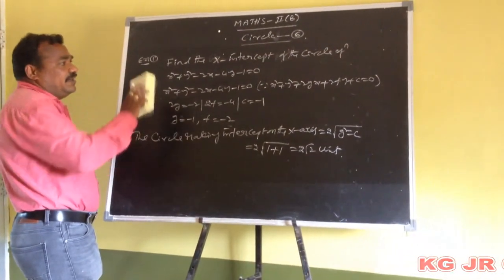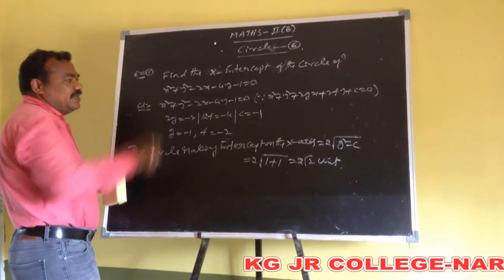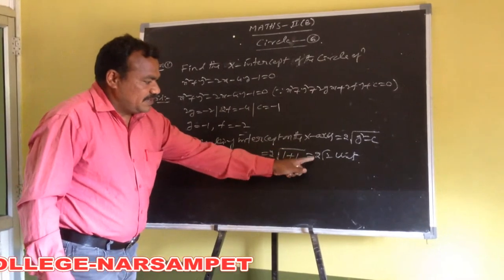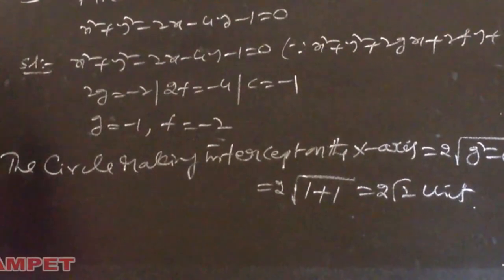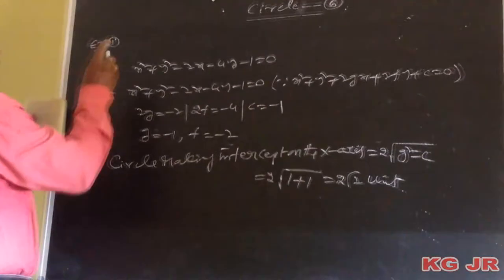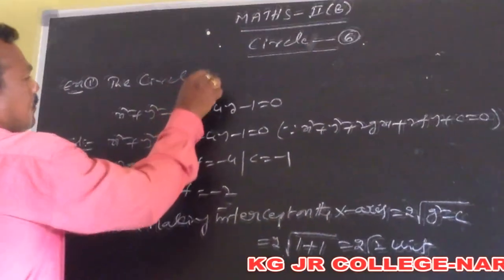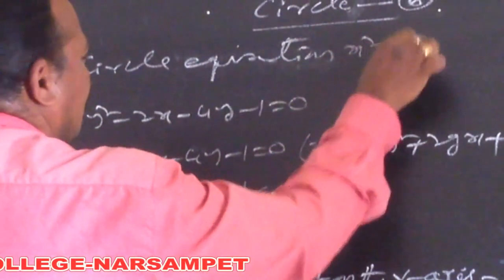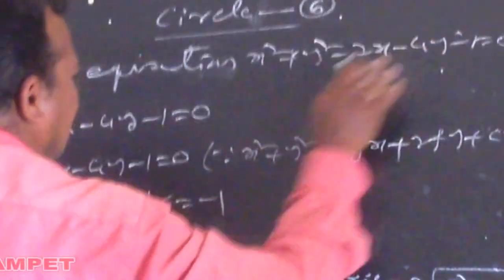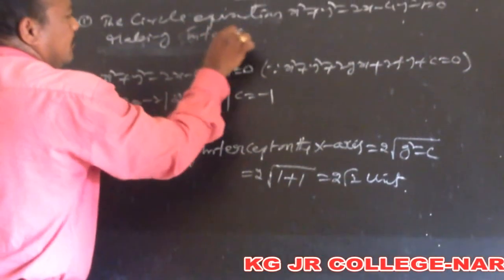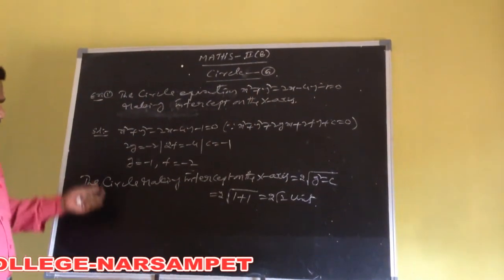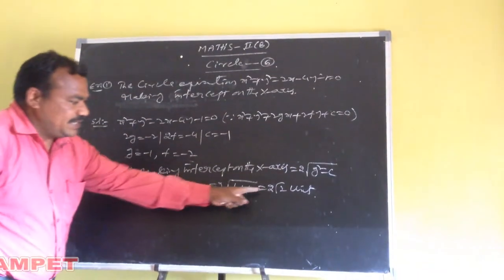The x-intercept is given by 2 into root of g square minus c. Here g square is (minus 1)² equals 1, and c equals minus 1. So we get 2 into root of 1 minus (minus 1) equals 2 into root of 2. The circle makes an x-intercept of 2√2 units.